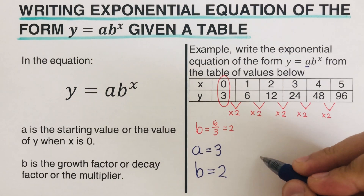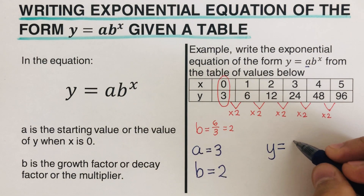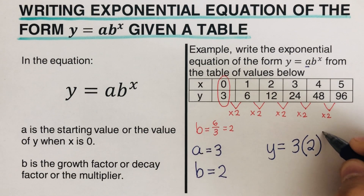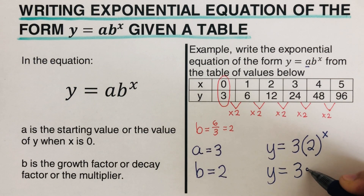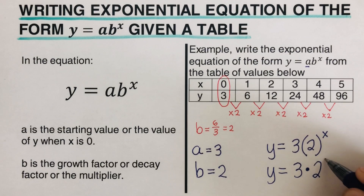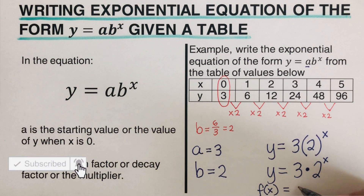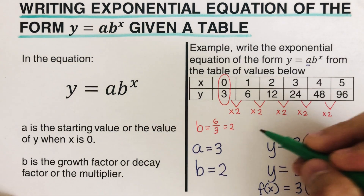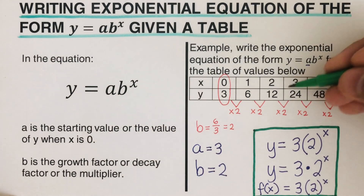We're now ready to write the equation. The equation we're going to have here would be y is equal to — our a is 3 — times, in parentheses, our b is 2 to the power x. Or others would write this as y equals 3 dot 2 to the power x. In function notation, we can rewrite this as f of x is equal to 3 times (2 to the power x). This is the equation that works for this table.